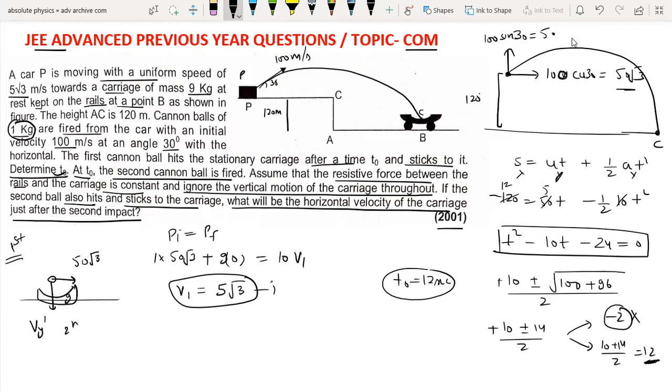Now for the second collision: the carriage is moving at 5√3. Another ball comes with velocity 50√3. Then we conserve momentum again. 1 into 50√3 plus 10 into 5√3 equals 11 times v2. v2 equals 100√3 divided by 11.